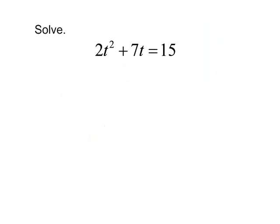Let's try one more. Solve 2t squared plus 7t equals 15. This is a quadratic equation. I'm going to subtract 15 from both sides. Now everything is on one side. And I need to factor it.